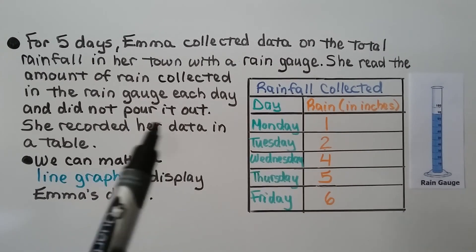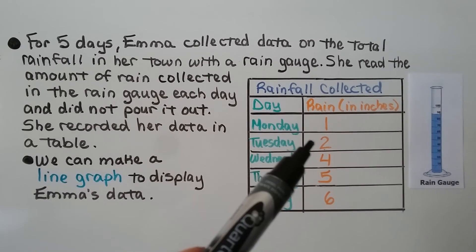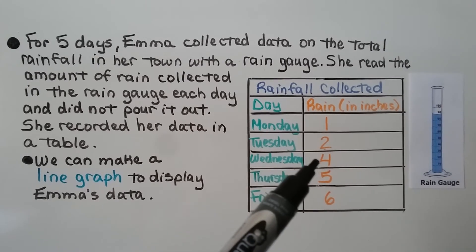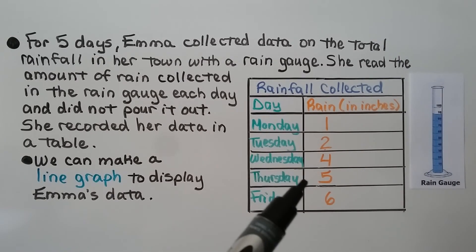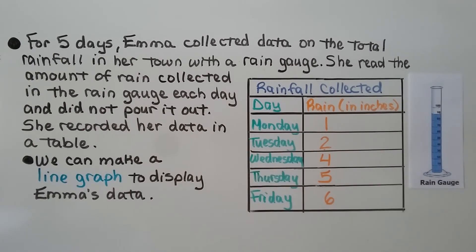Now notice it says she did not pour it out. So Monday it's showing one inch, and Tuesday it's showing two inches, but that includes the one inch from Monday, and Wednesday includes Monday and Tuesday's rain, and Thursday includes Monday, Tuesday, and Wednesday's rain, etc., and we can make a line graph to display Emma's data.